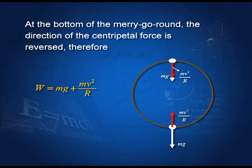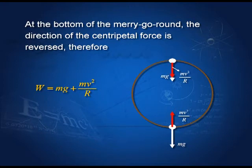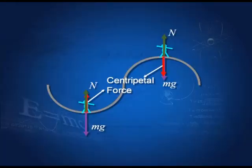At the lowermost point, the weight still acts vertically downwards but the centripetal force has changed direction. Therefore, the apparent weight is now mg + mv²/r, rather than mg − mv²/r as at the highest point. If mv²/r equals mg, then at the top the object has no apparent weight, while at the bottom it has a weight equal to twice its own weight.